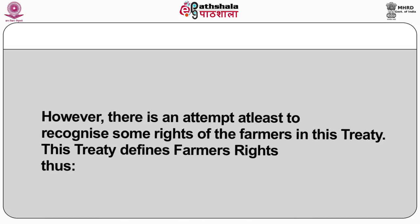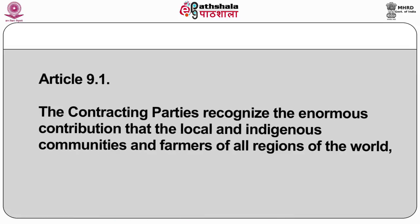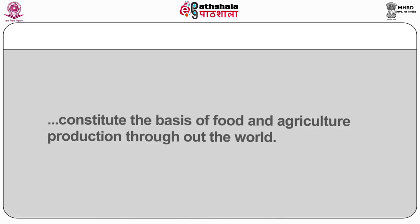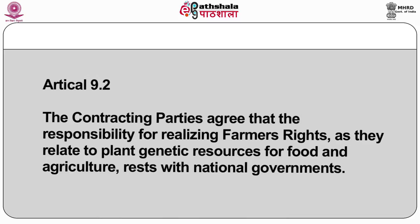However, there is an attempt at least to recognize some rights of the farmers in this treaty. This treaty defines farmers' rights under Article 9.1: the contracting parties recognize the enormous contribution that the local and indigenous communities and farmers of all regions of the world, particularly those in the centers of origin and crop diversity, have made and will continue to make for the conservation and development of plant genetic resources which constitute the basis of food and agriculture production throughout the world. The contracting parties agree that the responsibility for realizing farmers' rights as they relate to plant genetic resources for food and agriculture rests with national governments.